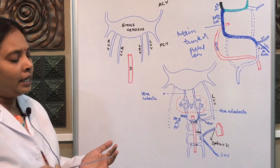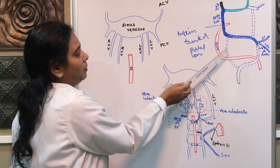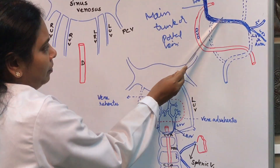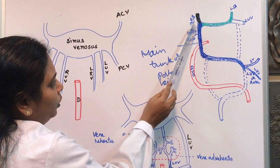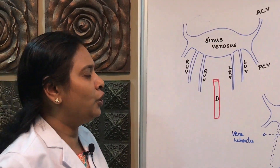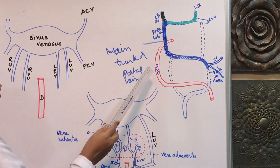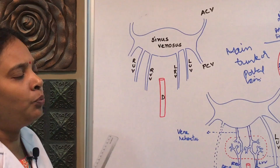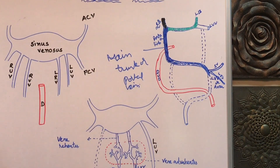For portal vein formation, we need to identify the main trunk, the right branch, and the left branch. The main trunk is developed from the part of the left vitelline vein above the splenic vein, the entire middle dorsal anastomosis, and the part of the right vitelline vein up to the cranial ventral anastomosis. The part of the right vitelline vein above the cranial ventral anastomosis forms the right branch of the portal vein.